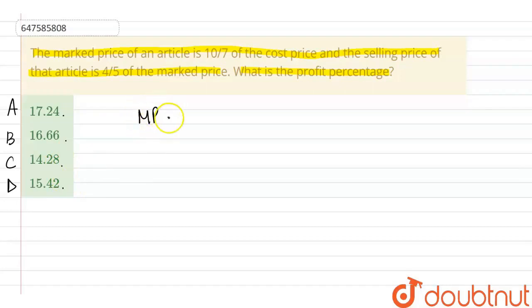Now, bola gaya hai ki, joh mark price hai, woh 10 by 7 times of CP hai, right? And us ke baad bola gaya hai ki, joh SP hai, woh basically 4 by 5 times of mark price hai. Now, hum kya karengi?